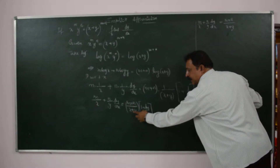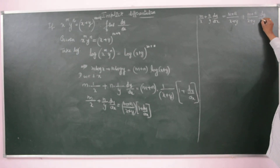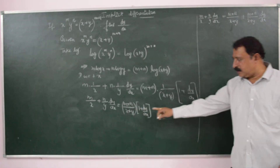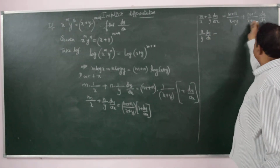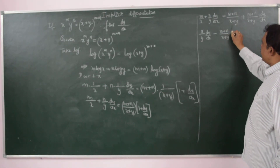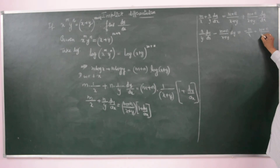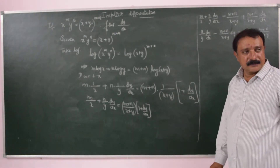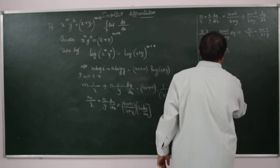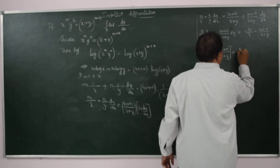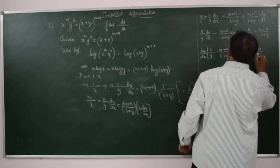Expanding: m by x plus n by y into dy by dx is equal to m plus n by x plus y plus m plus n by x plus y into dy by dx. Bringing dy by dx terms to the left: n by y minus m plus n by x plus y into dy by dx is equal to m plus n by x plus y minus m by x.